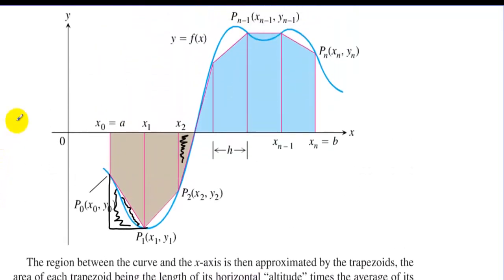The area of each trapezoid being the length of the horizontal altitude times the average of its two vertical bases. Well, let's take a look at that. And really what it's saying is the total area is just the area of all the trapezoids. Well, think of this one, this side right here is y sub 0. Think of this side right here as the y value, let's say of x sub 1. So that makes it y sub 1 and then so on. So we have y sub 2 and then y sub 3 would be right here.